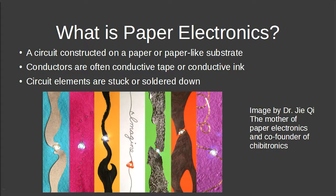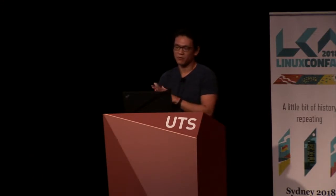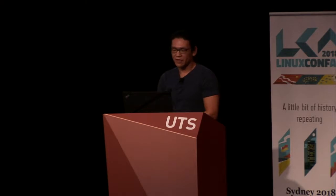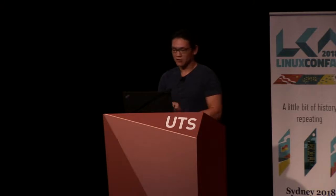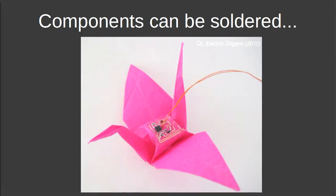I was introduced to paper electronics by G, who is sort of the mother of paper electronics and co-founder of the company we're working on together. Paper electronics is circuit construction on a paper or paper-like substrate — it could be cardboard or fabric. Conductors are drawn on with ink or laid down with conductive tape, and circuit elements are either stuck or soldered down. It can be three-dimensional, like a pop-up book.